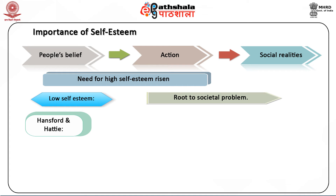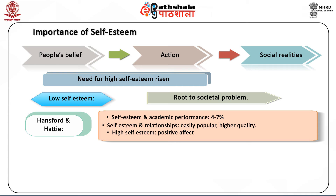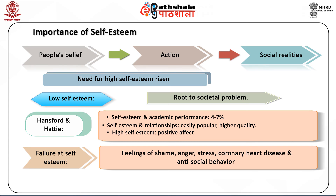Hansford and Hattie concluded that self-esteem accounts for between 4 and 7% of the variance in academic performance. In terms of relationships, people with high self-esteem claim to be especially popular and rate their friendships as being of higher quality compared with people with low self-esteem. Positive affects such as pride are produced temporarily by the successful pursuit of self-esteem. In contrast, failure at goals linked to self-esteem leads to drops in state self-esteem and increases in sadness, anger, shame and other intensely negative emotions.